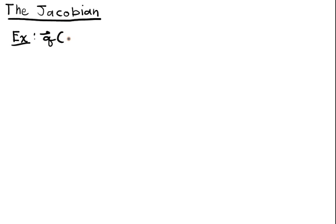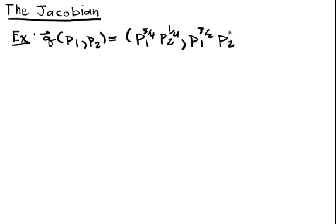So Q is a demand vector, dependent upon a price one and a price two of good one and good two. We're going to say it's P1 to the three fourths, P2 one fourth. And the second entry is going to be P1 to the three halves, P2 to the negative one half.